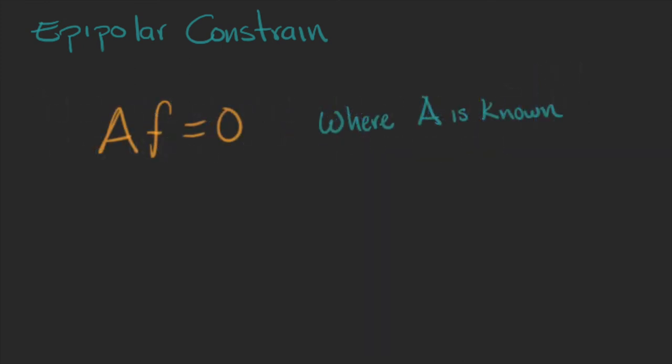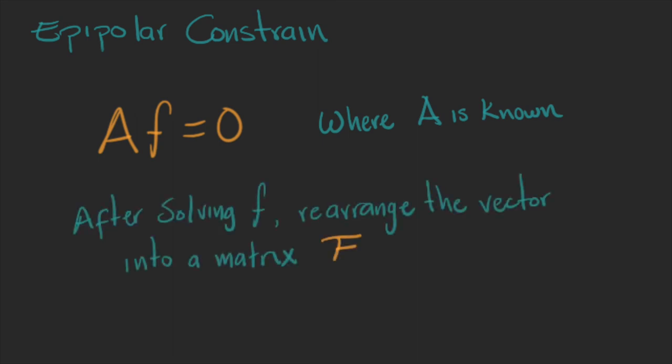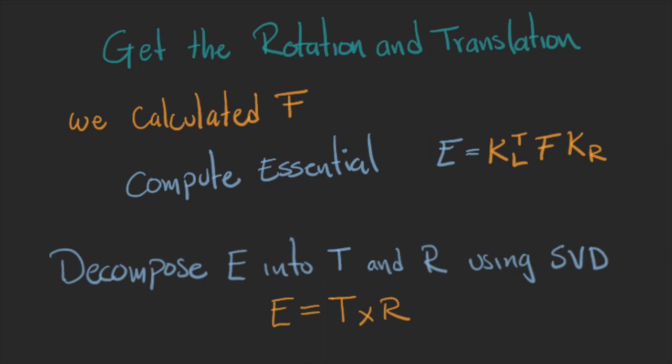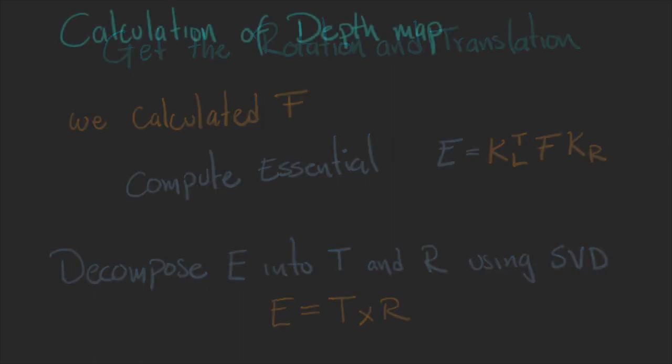Now, we can solve the linear system and rearrange the F values to form the fundamental matrix. Once we find this fundamental matrix, then we can apply the formula that includes the camera matrix to find the essential matrix. And then, using singular value decomposition, we can obtain the translation and rotation. And now we have calibrated our system.